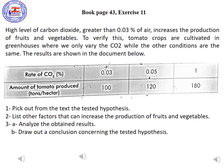Number 3: Analyze the obtained results. Always, when asked to analyze, you must say 'increases' or 'decreases' — do not say 'it becomes,' as that is incorrect. When the rate of carbon dioxide is 0.03%, the amount of produced tomato is 100 tons per hectare. When the rate of carbon dioxide increases to 1%, the amount of produced tomato increases to 180 tons, which is 80 tons more. Conclusion: I conclude that high levels of carbon dioxide greater than 0.03% increase the production of fruits and vegetables — write the hypothesis again, but without 'maybe.'